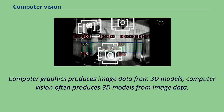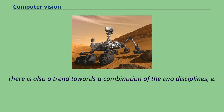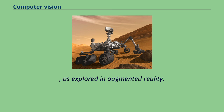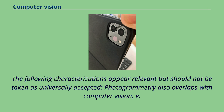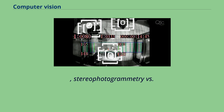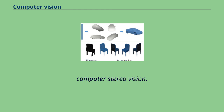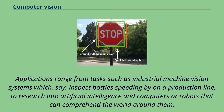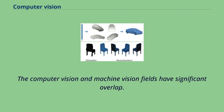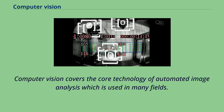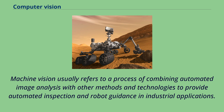There is also a trend towards a combination of the two disciplines, as explored in augmented reality. Photogrammetry also overlaps with computer vision, e.g., stereophotogrammetry versus computer stereo vision. Applications range from tasks such as industrial machine vision systems which inspect bottles speeding by on a production line, to research into artificial intelligence and computers or robots that can comprehend the world around them. Machine vision usually refers to a process of combining automated image analysis with other methods and technologies to provide automated inspection and robot guidance in industrial applications.